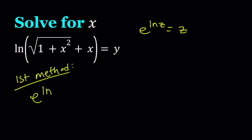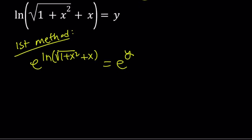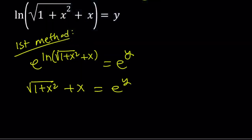So let's go ahead and raise e to the power of both sides. We're going to get e to the power ln of square root of 1 plus x squared plus x equals e to the power y. And e to the power ln of that thing is going to be equal to square root of 1 plus x squared plus x. We get an equation from here, and normally when you're trying to solve for x you would get rid of the radical. But before we square both sides, let's put the x on the right-hand side so we don't introduce more radical terms. I will isolate the radical.